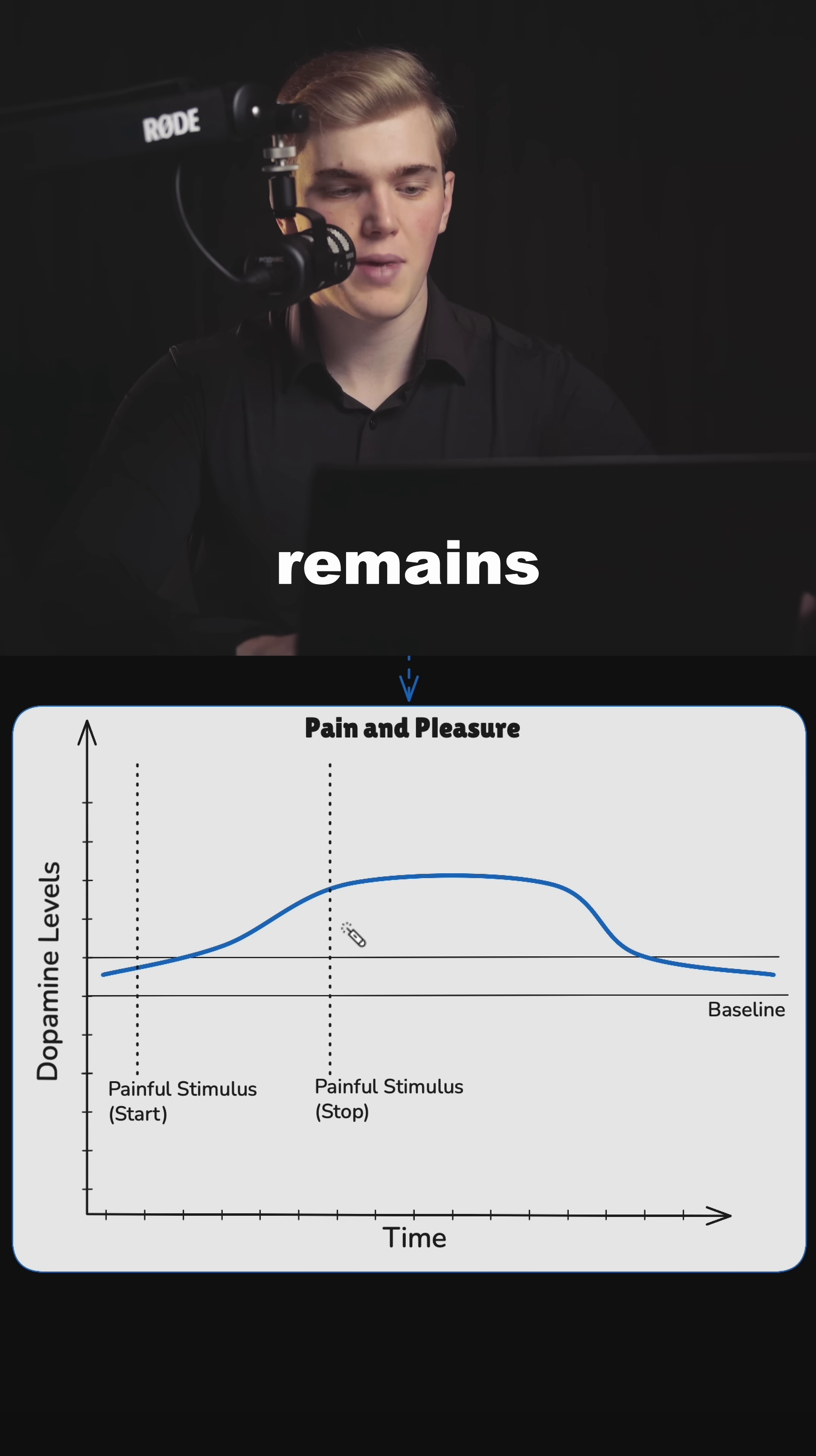So the pain-pleasure balance remains the same because you had a painful stimulus, you managed to overcome it, and then your brain rewards you with a lot of dopamine before you return to baseline values. As you can see, there is no crash of dopamine here.